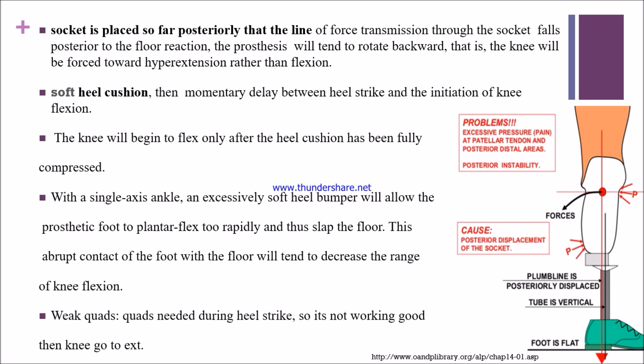With weak quadriceps, if the quadriceps is not working during heel strike, the limb goes into extension, causing inadequate knee flexion. Normally, the quadriceps works eccentrically at heel strike to control limb loading and prevent excessive knee flexion. If the quadriceps is weak, the knee extends prior to heel strike, resulting in reduced knee flexion.